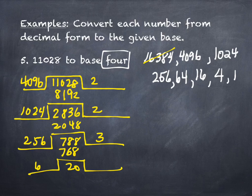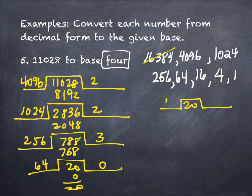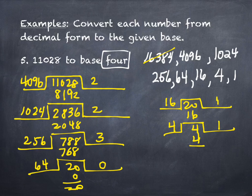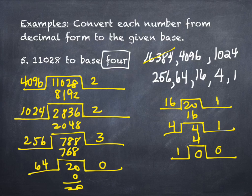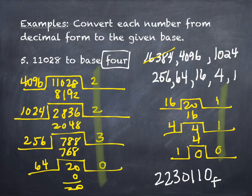Divide 20 by 64: it goes in zero times. Don't skip that zero — it's part of your answer. Remainder still 20. Divide by 16: goes in once. 1 times 16 is 16, remainder 4. Divide by 4: goes in once. Remainder 0. But you must still divide by 1 — the very last value — or you'll be missing that final zero. It goes in zero times. Reading the quotients down the right side: 2, 2, 3, 0, 1, 1, 0 — that's the answer, base 4. Don't forget the subscript.